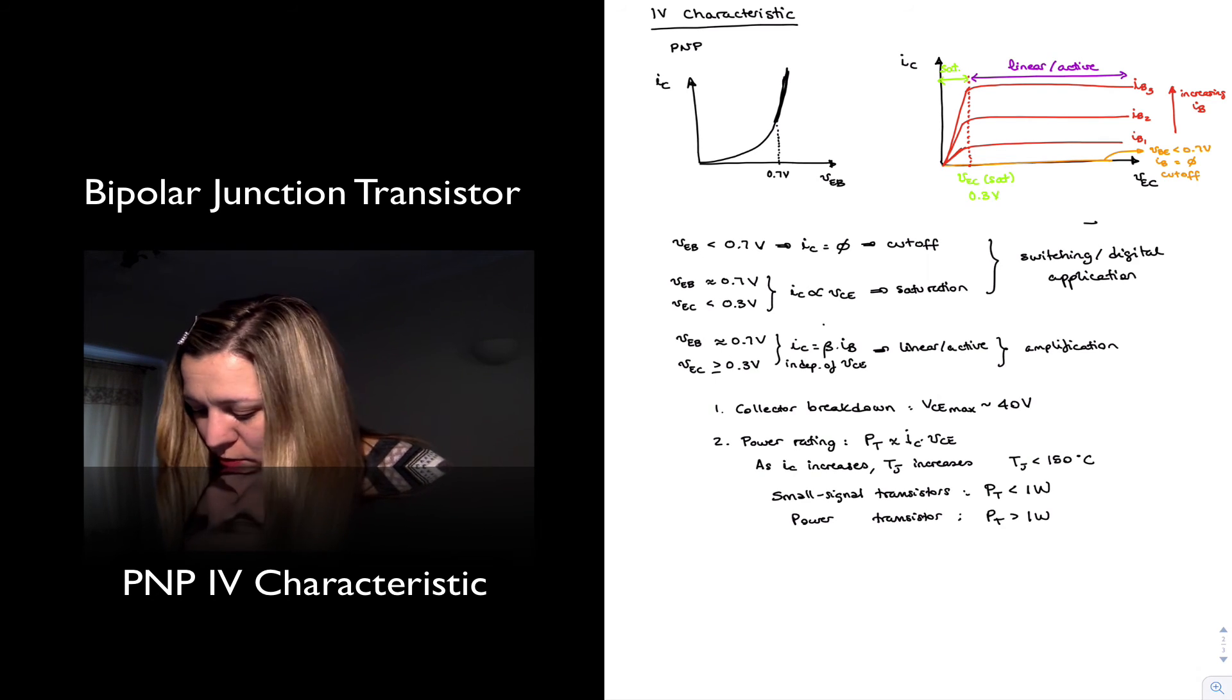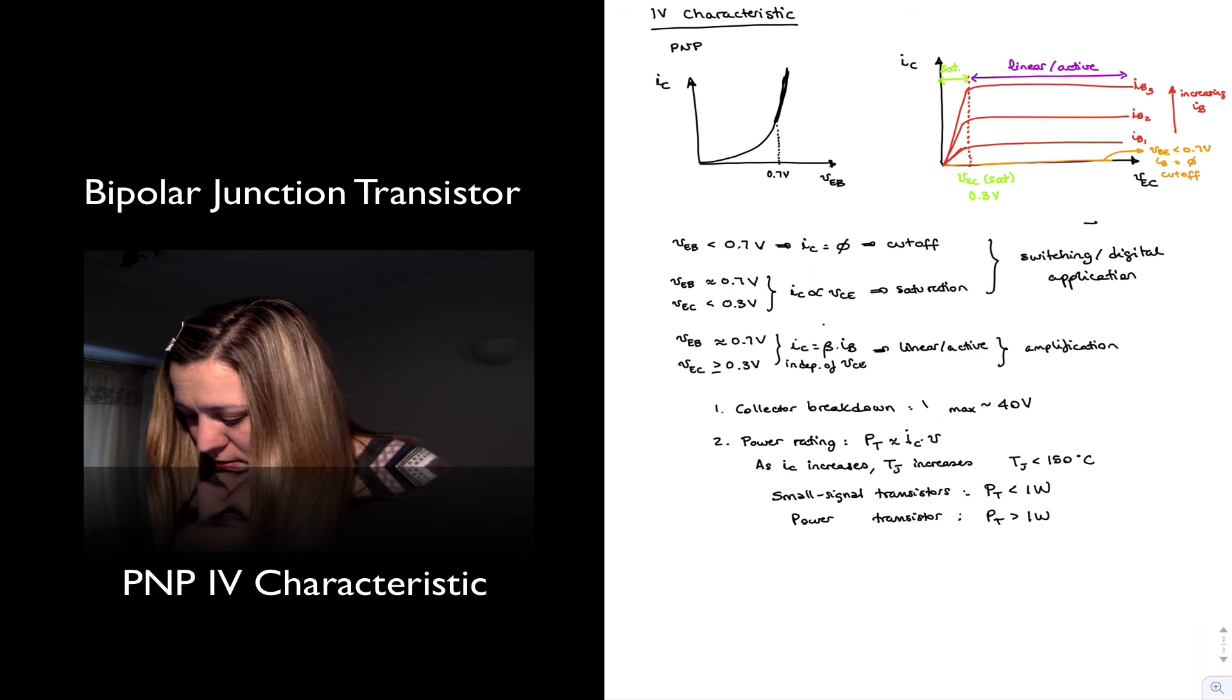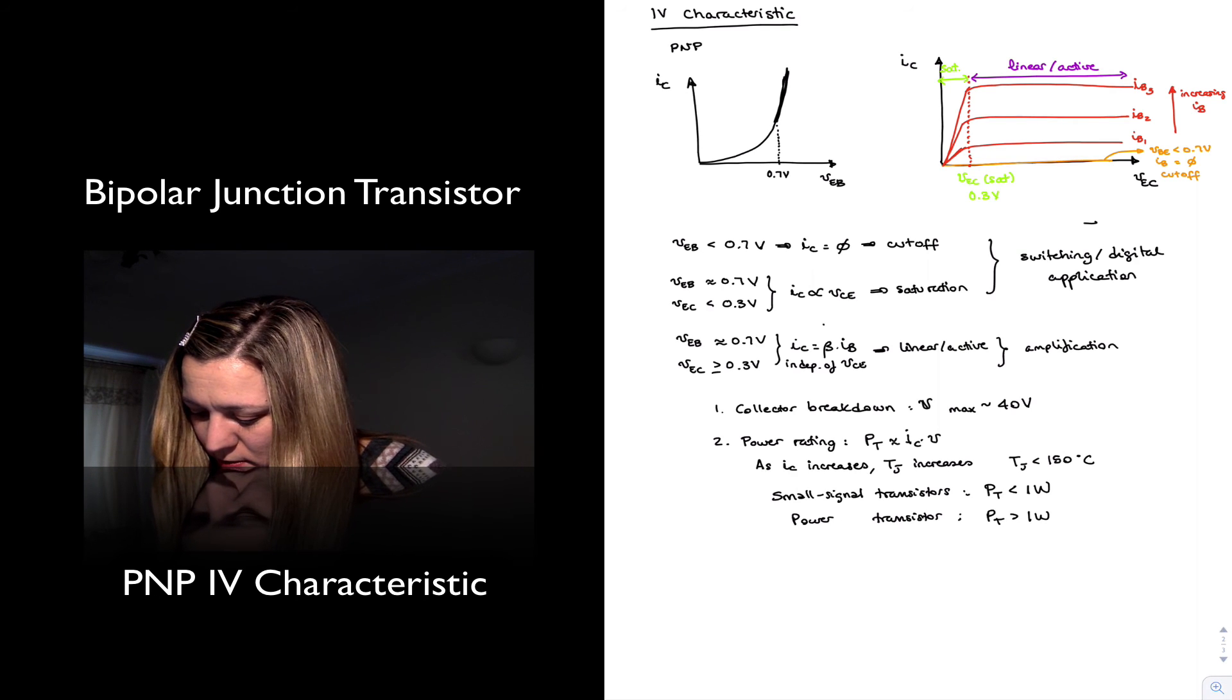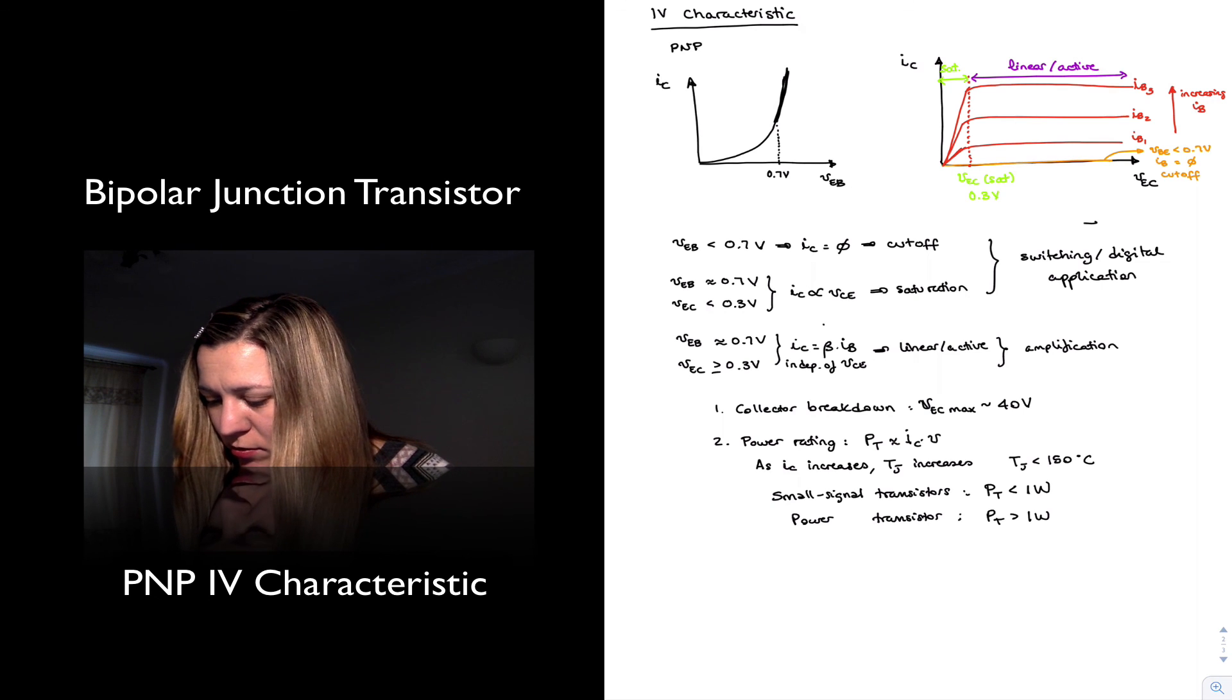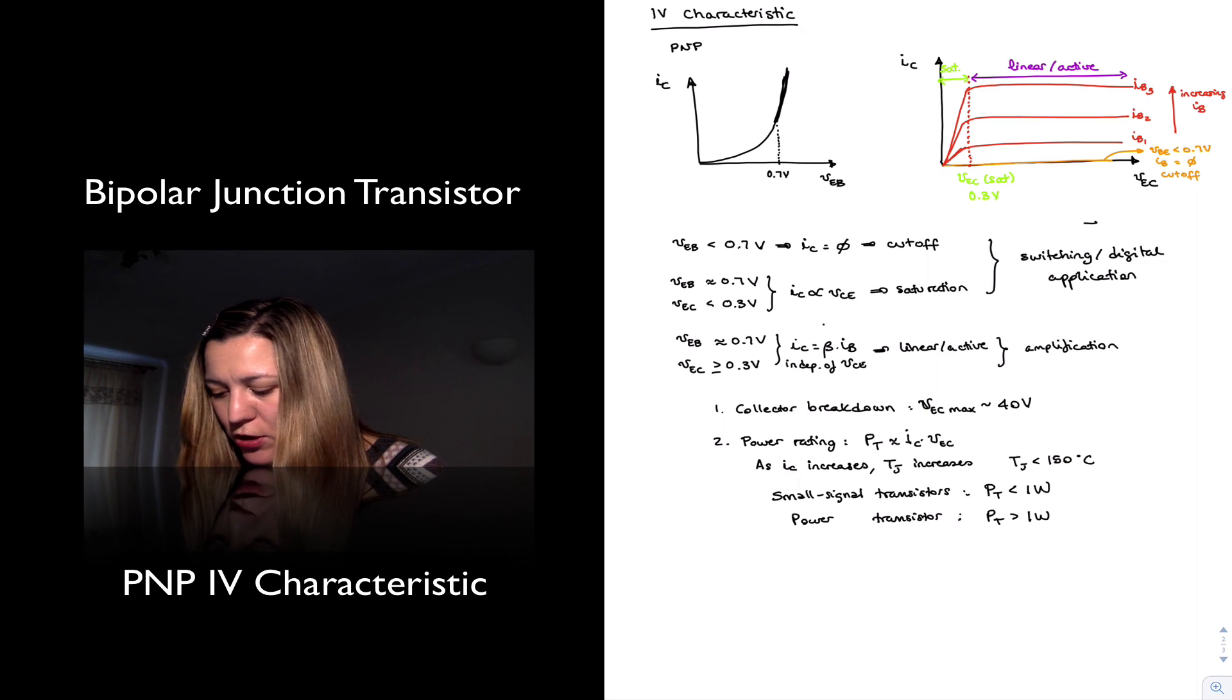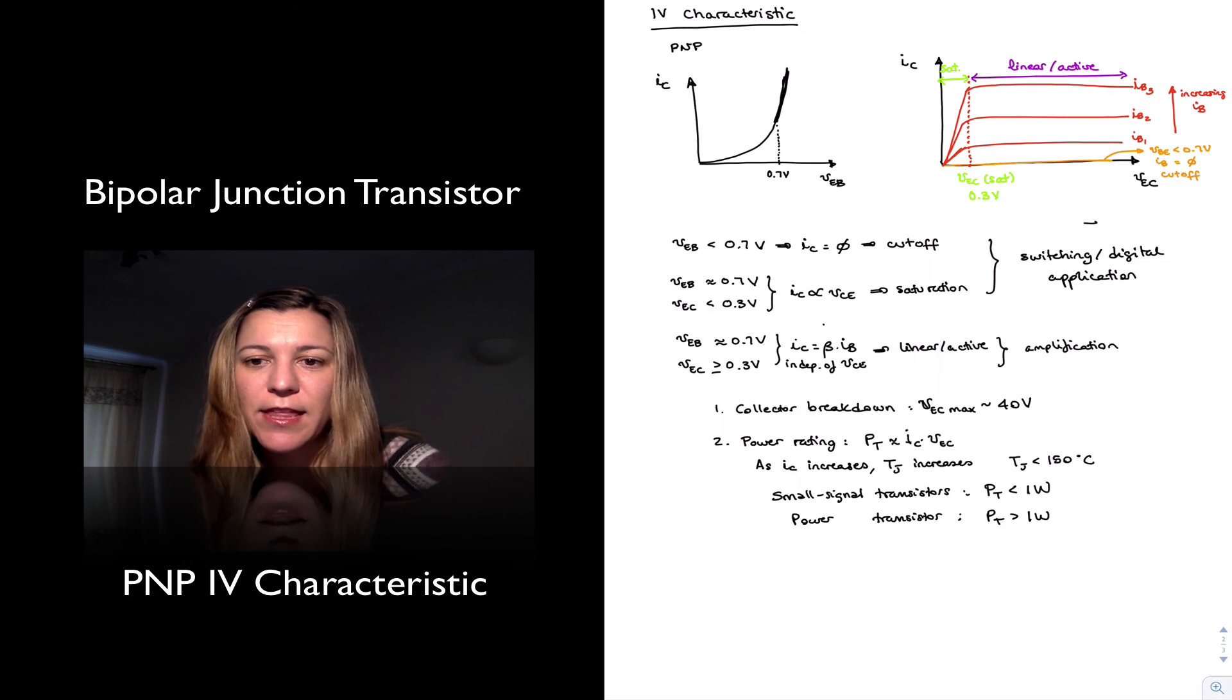Instead of VEC maximum, here we will have VEC for collector breakdown, and the power calculation will be, obviously, collector current times VEC, emitter-collector voltage. Other than that, everything should remain the same, same behavior. Thank you.